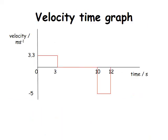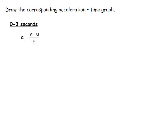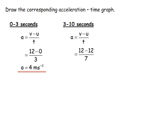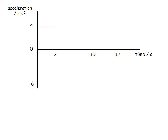From those calculations we can draw the velocity time graph: an initial velocity of 3.33 m/s forward for three seconds, then stationary, then a velocity of −5 m/s backward for two seconds. Now for the acceleration time graph from the velocity time graph, we divide it into sections and use a = (v − u) / t. In the first three seconds the acceleration is +4 m/s². In the next seven seconds there is none. In the last section the acceleration is −6 m/s². We plot those values to get the acceleration time graph.